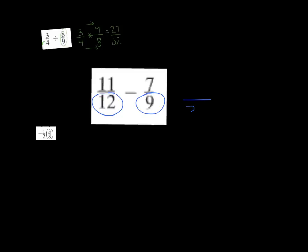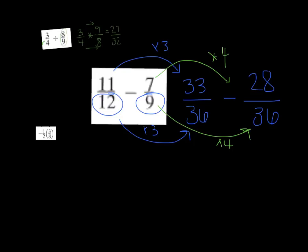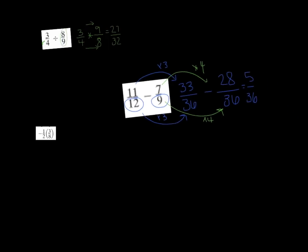The common denominator is 36. 12 times 3 is 36, so 11 times 3 is 33. Then 9 times 4 is 36, so we take 7 and multiply it by 4 — 7 times 4 is 28. Now we subtract: 33 minus 28 is 5, over 36. You cannot reduce 5 thirty-sixths, so we are done with that problem.